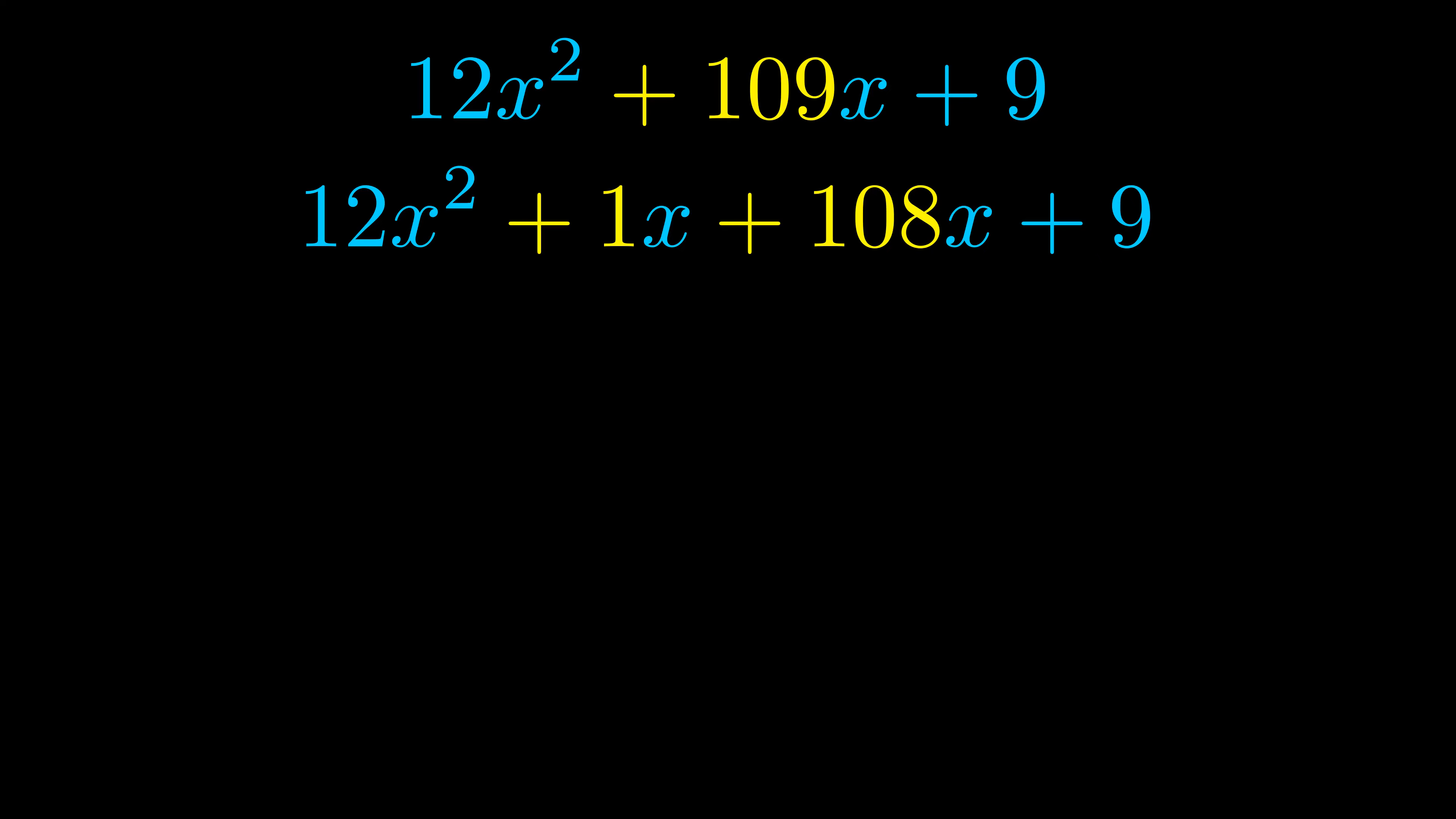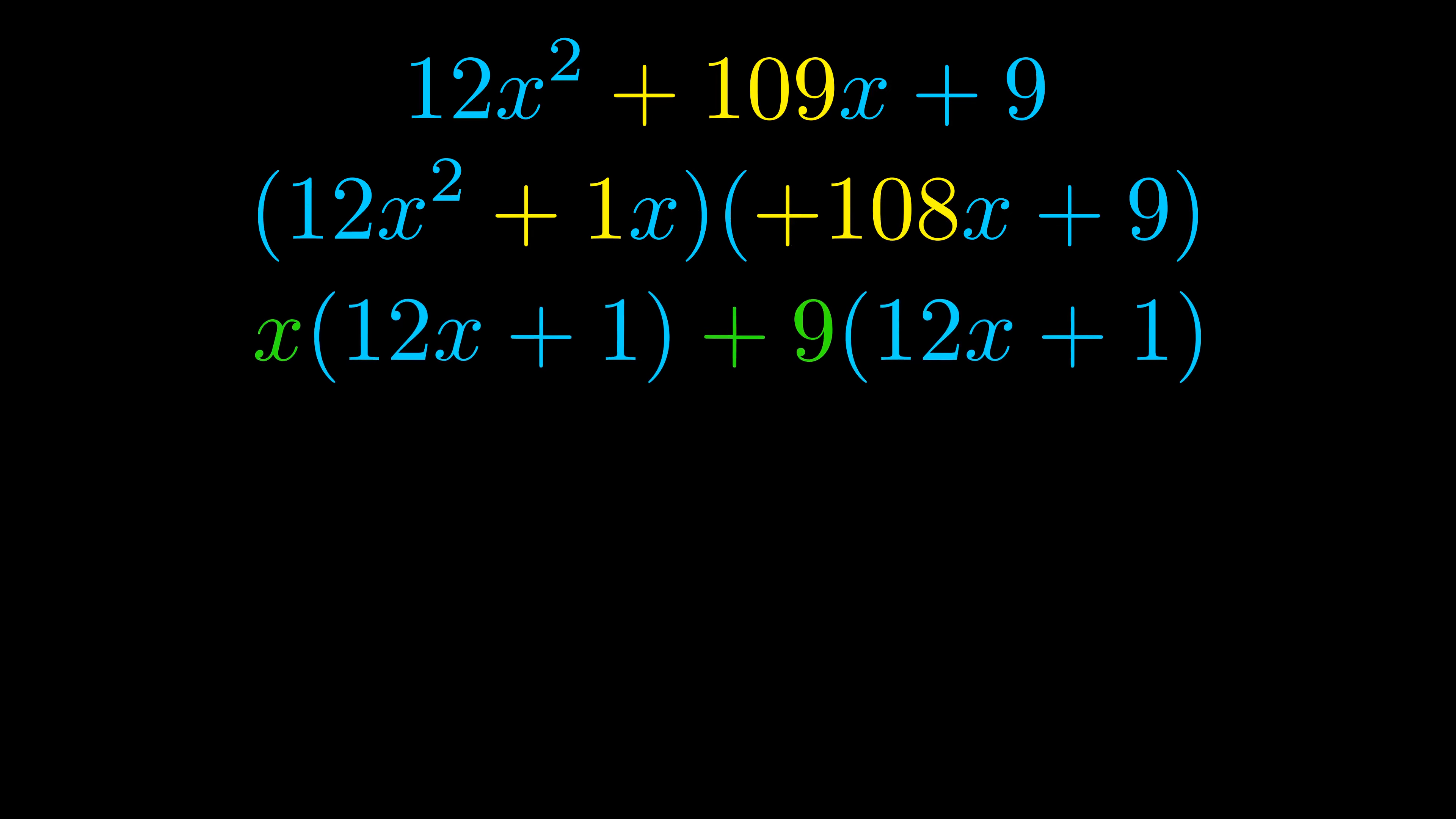Once we've done this, we go ahead and put parentheses around the first term and the last term. And we do that so that we can take the greatest common factor out of both terms. We can see the greatest common factor is now outside in green.